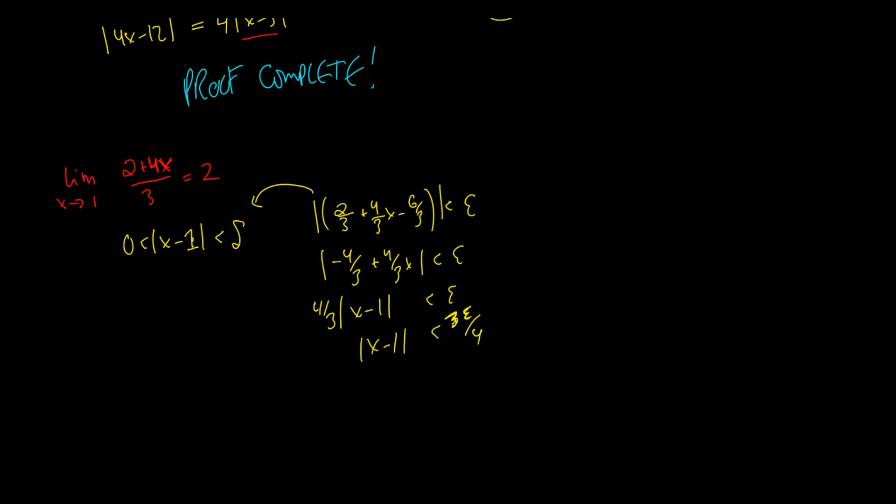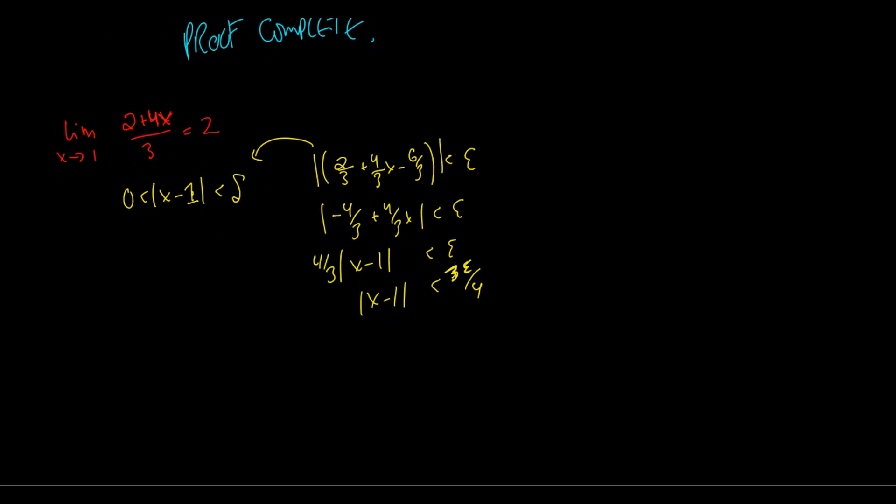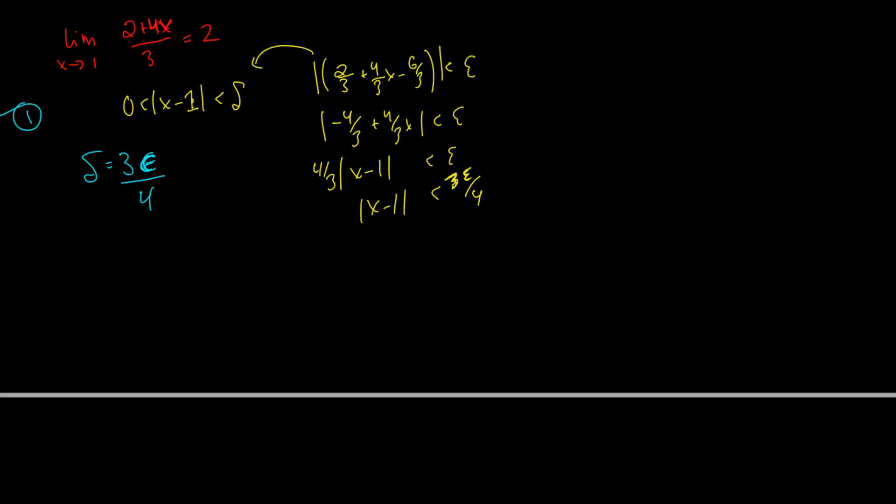I'll try to do something about that now. So we've gone one direction, we've done step one, we've picked a delta, and we're going to pick delta is equal to 3 epsilon over 4. I'll use this epsilon. It's used in set notation, but it'll do better for differentiating my writing in this example.